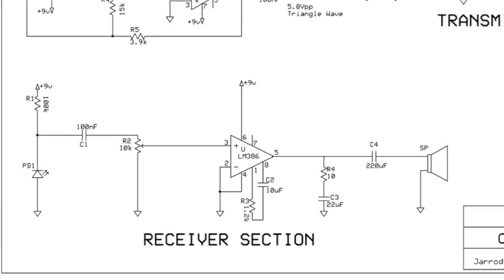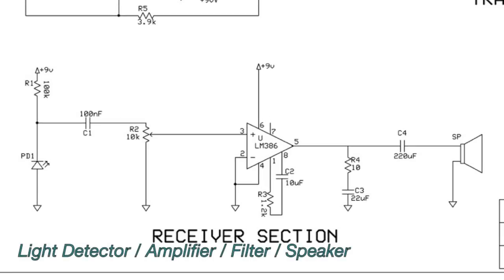So the final part of the circuit is the receiver and the light detector. With the light detector, you can see a photodiode on the left-hand side, and basically, its job is to receive the light from the laser, and generate a voltage that's proportional to whether the laser is on or off. It's a fairly small voltage, and it's not really of much use yet, so it has to go through an amplifier.